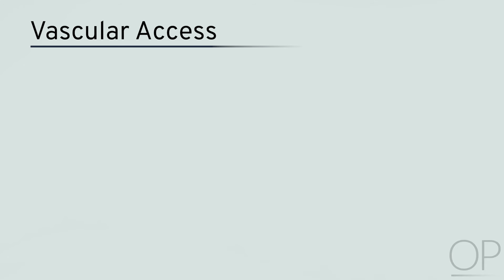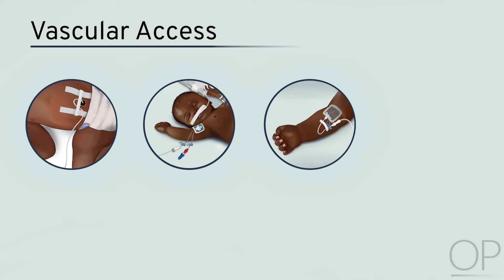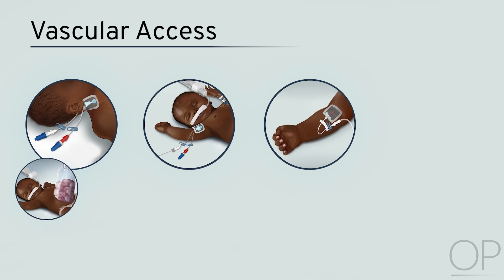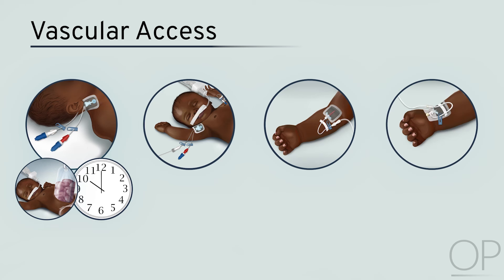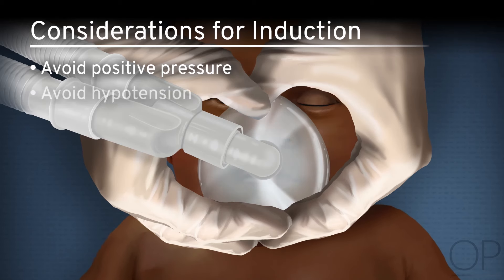An umbilical vein catheter or PICC line may have already been placed in the neonatal intensive care unit. Depending on the clinical status, the scheduled procedure, and the anticipated postoperative course, further access may be necessary. Catheters in the umbilical vessels are often removed and replaced with alternative lines during abdominal surgeries or for long-term access. A peripheral invasive arterial line is important for close blood pressure monitoring and blood gas sampling and can be placed post-induction.